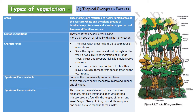The trees reach great heights — up to 60 meters or even above. Since the region is warm and wet throughout the year, it has a luxuriant vegetation of all kinds: trees, shrubs, and creepers, giving it a multi-layered structure. There is no definite time for trees to shed their leaves, so these forests appear green all year round. Commercially important trees include ebony, mahogany, rosewood, rubber, and cinchona.